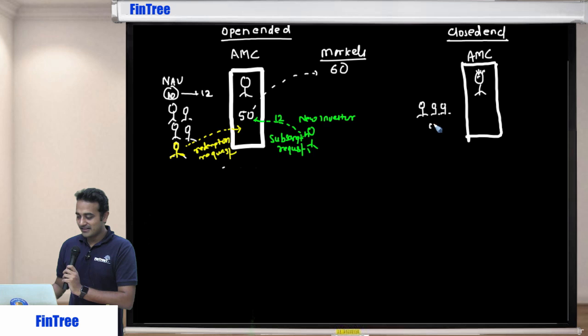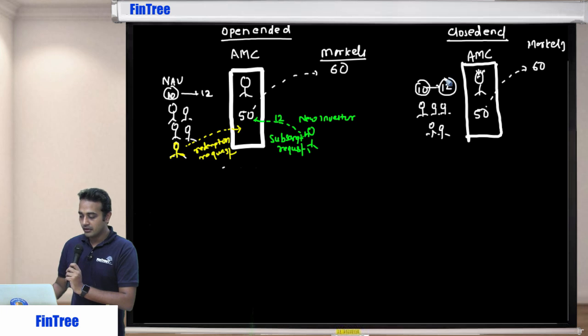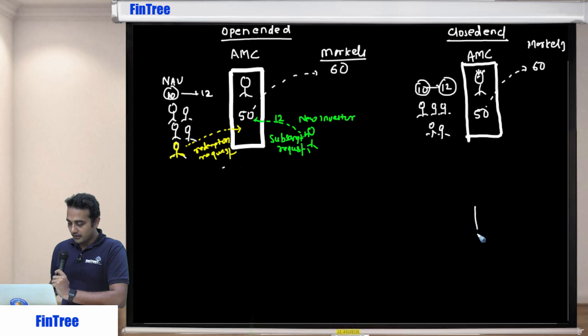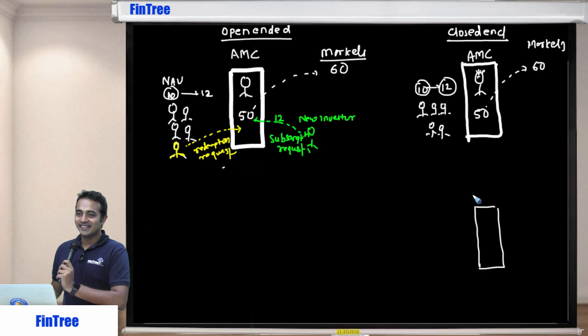And who are these? Investors. You invest 10 each, and now the fund manager has how much? 50. He takes that money and puts it in the markets, and now it has become 60. So ideally that unit would be worth how much? 12.